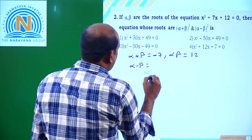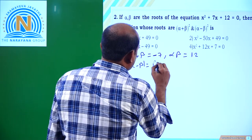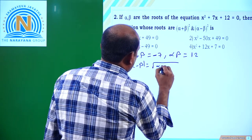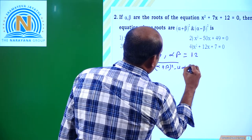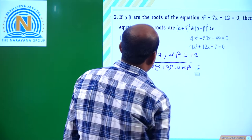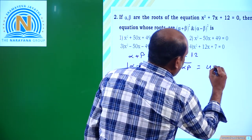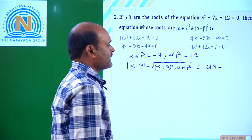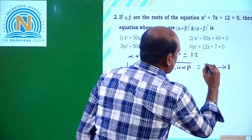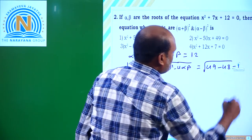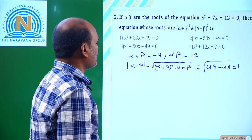Alpha minus beta equals the square root of (α + β)² minus 4αβ, which equals √(49 - 48) = √1 = 1. So alpha minus beta = 1.